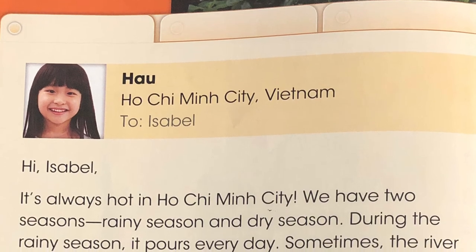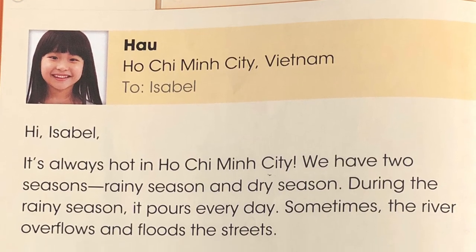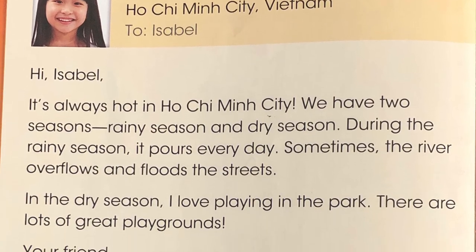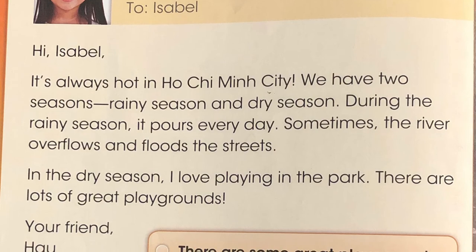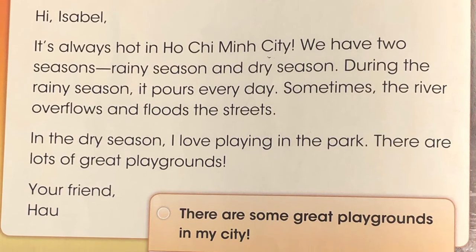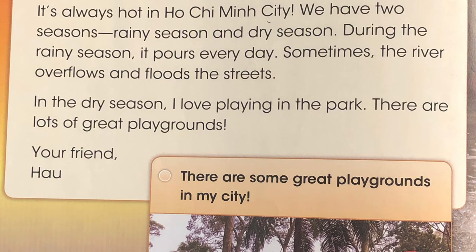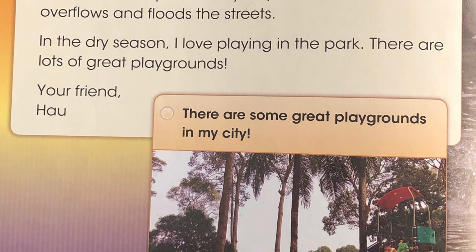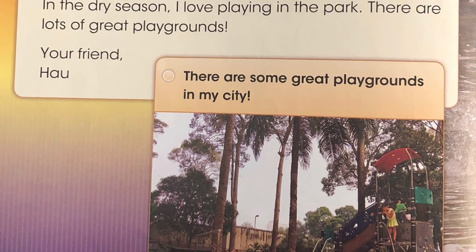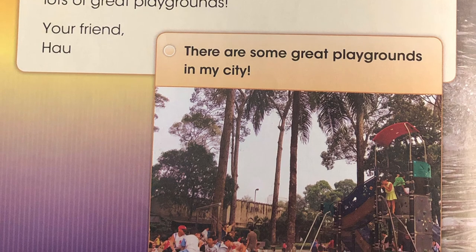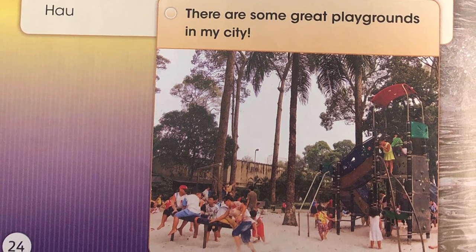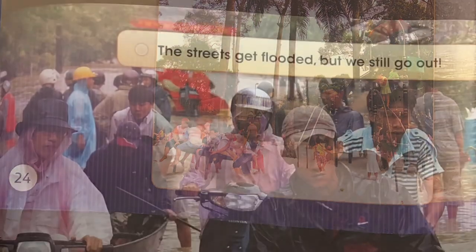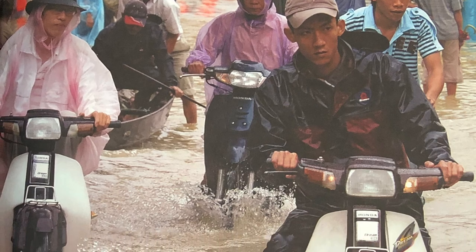Hao, Ho Chi Minh City, Vietnam. To Isabel. Hi, Isabel. It's always hot in Ho Chi Minh City. We have two seasons: rainy season and dry season. During the rainy season, it pours every day. Sometimes the river overflows and floods the streets. In the dry season, I love playing in the park. There are lots of great playgrounds. Your friend, Hao. There are some great playgrounds in my city. The streets get flooded, but we still go out.